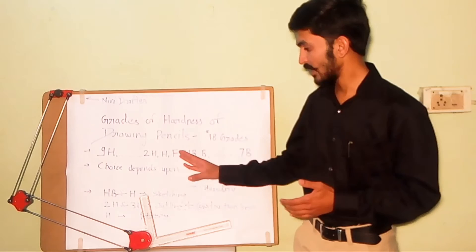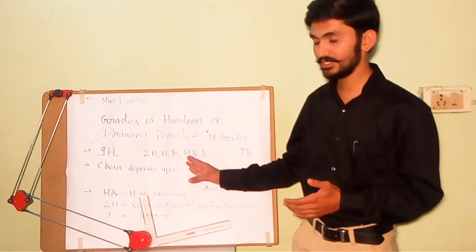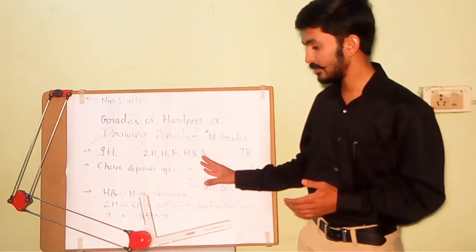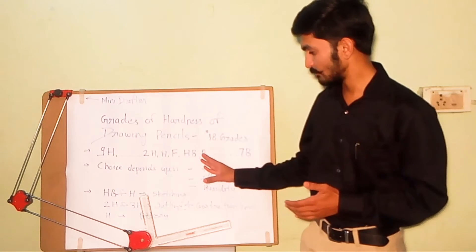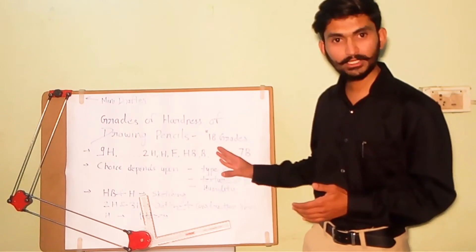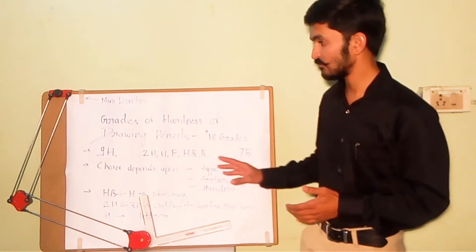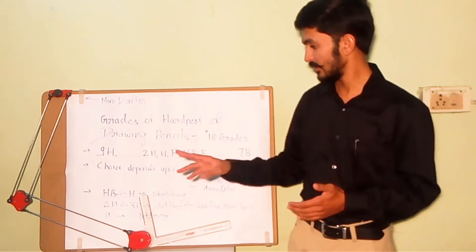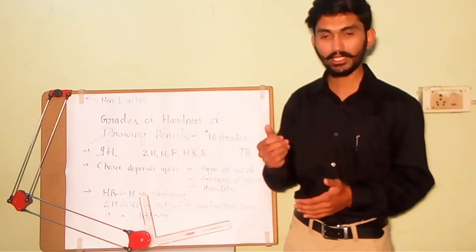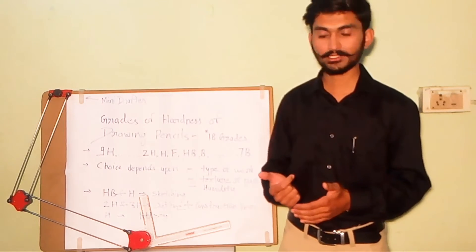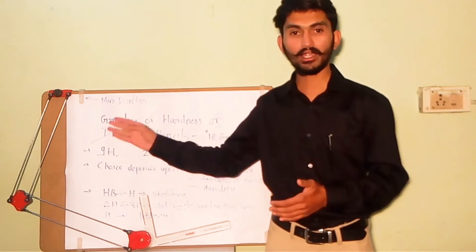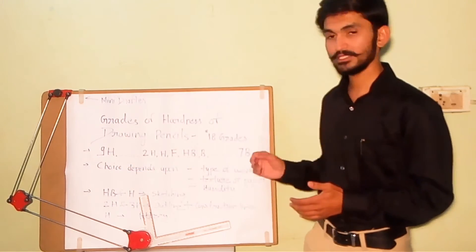From B to 2B, 3B up to 7B, where H represents hardness, HB represents hard black, and B represents blackness. So the 9H is the hardest one and the 7B is the softest one.